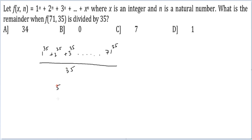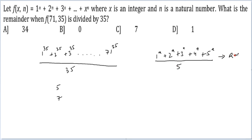If I am looking for the remainder with 35, I look for remainders with 5 and 7. For any 5 consecutive numbers, 1ᵃ + 2ᵃ + 3ᵃ + 4ᵃ + 5ᵃ divided by 5 gives remainder 0. In this string of 71 numbers, there are 14 groups of 5 consecutive natural numbers. So the only number that concerns me is 71³⁵ divided by 5, which gives remainder 1. So remainder with 5 is 1.